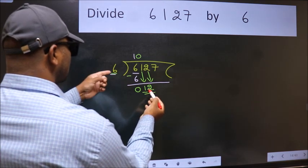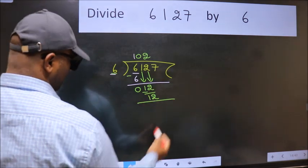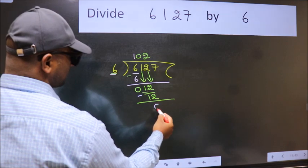So 12. When do we get 12 in 6 table? 6 twos, 12. Now we subtract. We get 0.